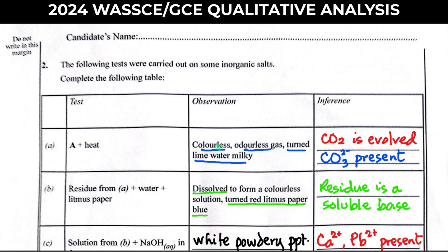However, color and odor can be used to distinguish them. Both are colorless, but SO₂ is not odorless — it has an irritating smell, like burning matches. CO₂ has no smell. So the correct inference is CO₂, and for CO₂ to be evolved it means the ion present is the trioxocarbonate(IV) ion, CO₃²⁻, since most trioxocarbonate(IV) salts decompose on heating, apart from Group 1 trioxocarbonates.